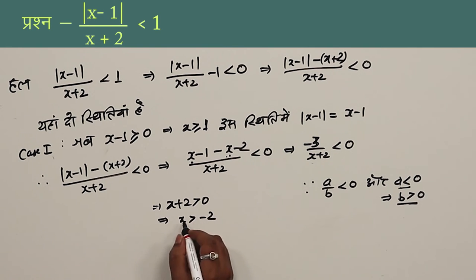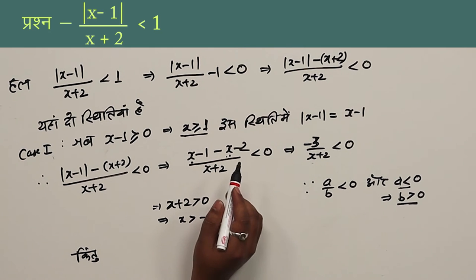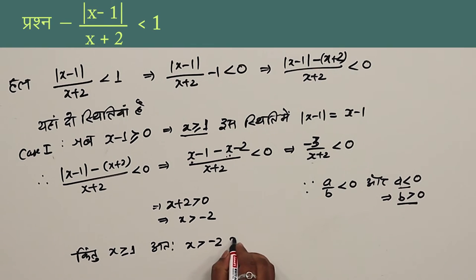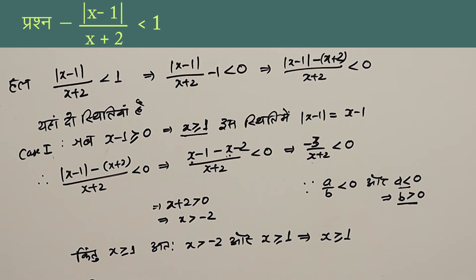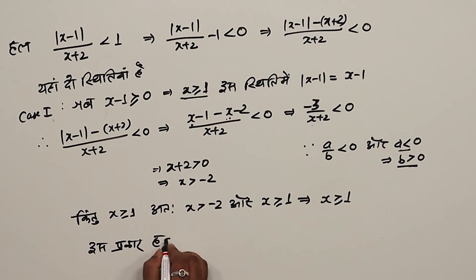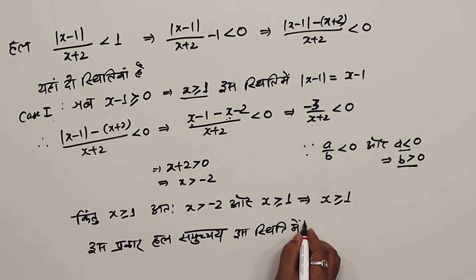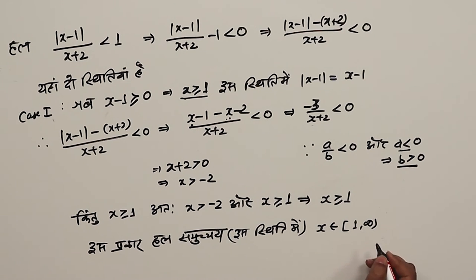From this, x is greater than minus 2, and combined with x greater than or equal to 1, we conclude that x is greater than or equal to 1. So in this way, the solution set is x belongs to closed interval 1 to infinity.